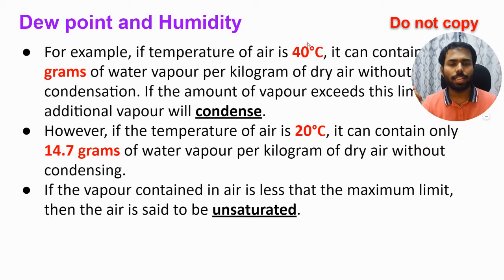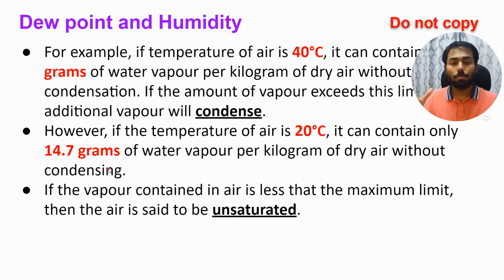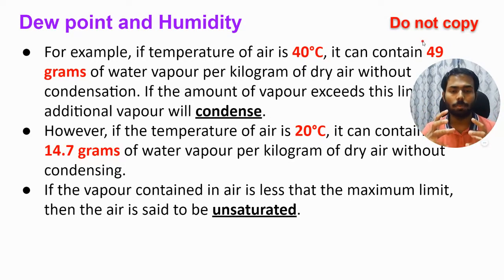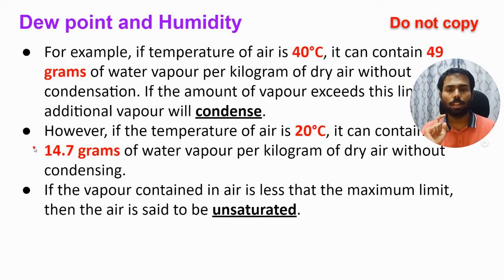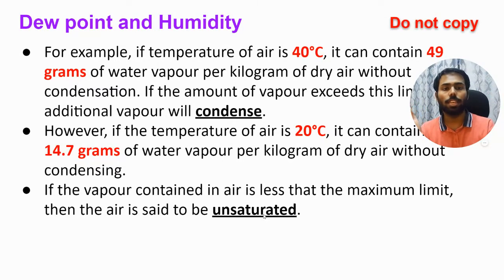Now let's change the temperature. Instead of 40°C, let's have dry air at 20°C. As you decrease the temperature, the water holding capacity decreases. So if the temperature of the air is 20°C, it can contain only 14.7 grams of water vapor per kilogram of dry air without condensing. At 40°C the capacity was 49 grams, but at 20°C the same one kilogram of dry air can hold only 14.7 grams. If more than 14.7 grams is added, it will start condensing. If the vapor in air is less than the maximum limit, the air is said to be unsaturated.